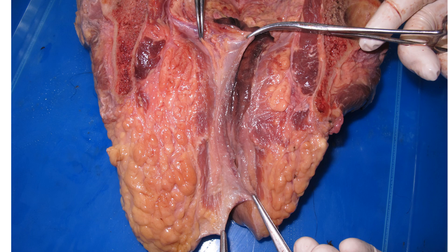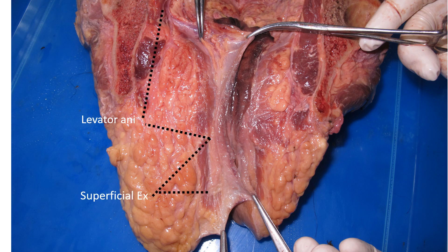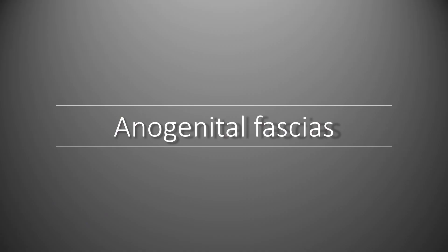Here in this cadaver, we can see the distinct parts of the external sphincter. The upper part is levator ani. There is no distinct deeper part of the external sphincter, followed by the superficial external sphincter and the subcutaneous external sphincter.